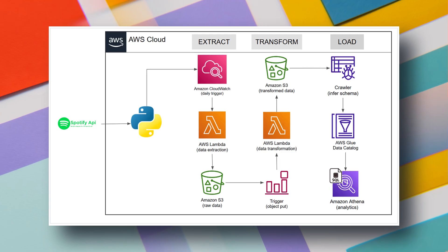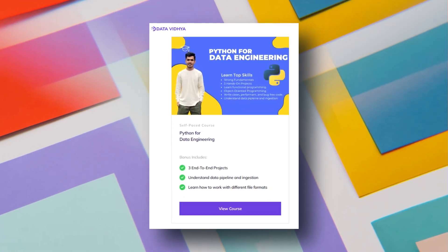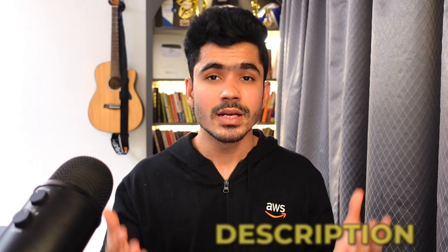Now you also need to build projects. The first project is the Spotify Data Pipeline, which is part of my Python for Data Engineering course. You'll learn to build a complete data pipeline on AWS: extract data from the Spotify API, write transformation jobs on AWS Lambda, store data in an S3 bucket, do more transformation, use AWS Glue to build a catalog, and then use Amazon Athena to analyze all the data.